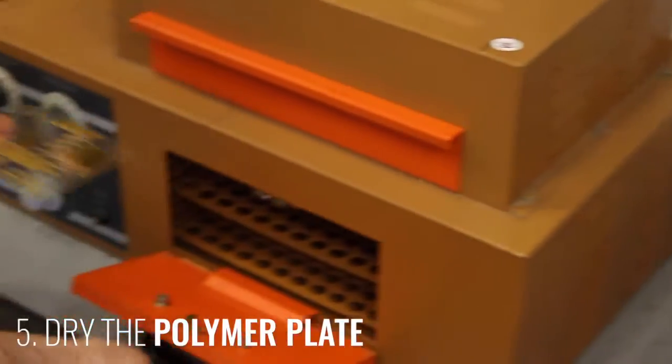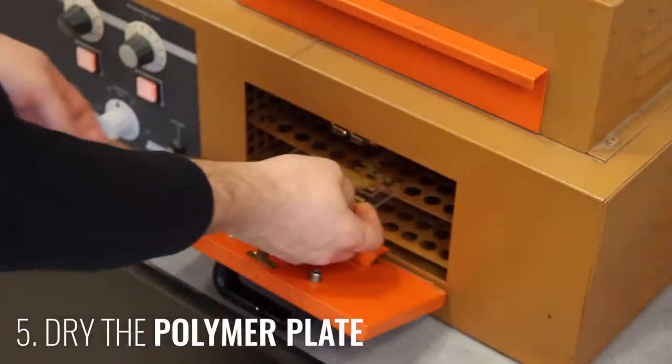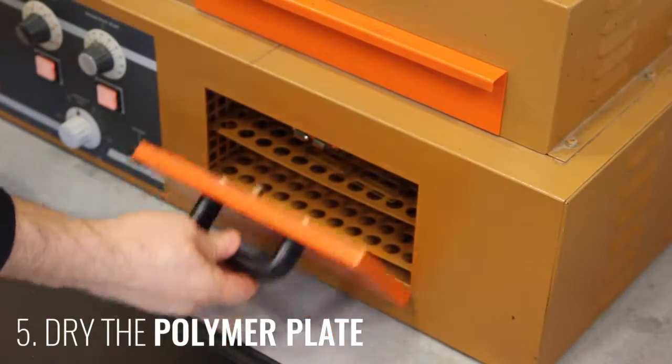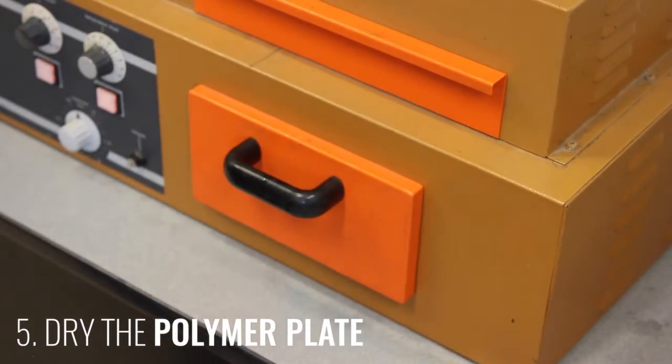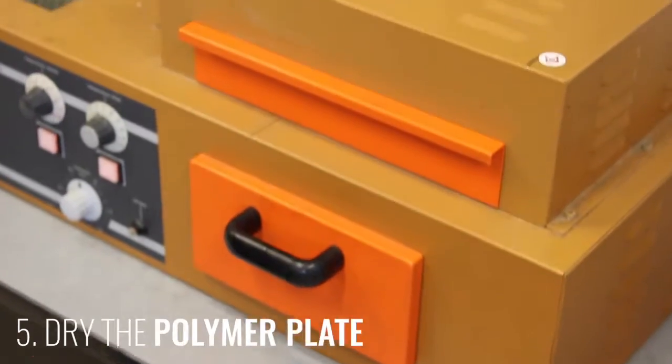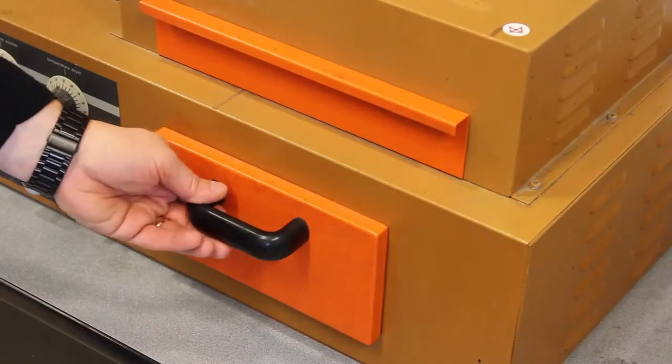And we'll move over to the drying tray where previously we had turned on the heater and the blower and we'll just sit it on the tray there for a couple of minutes until all the water is dried off.